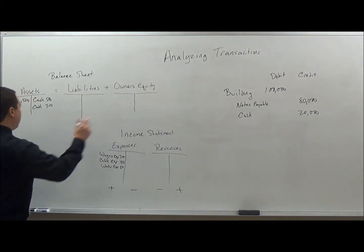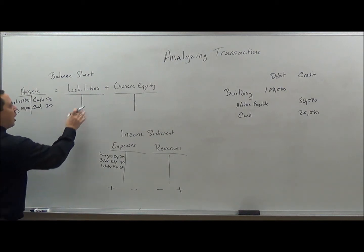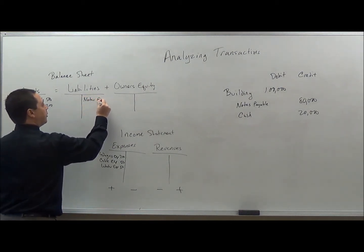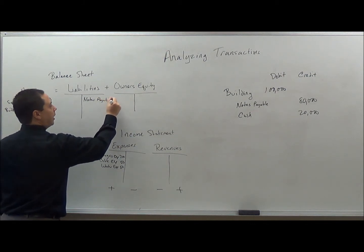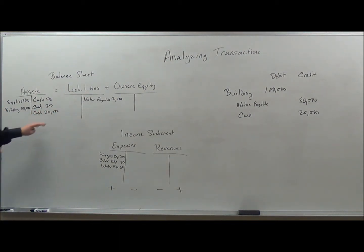And so let's put those over into the appropriate places in the balance sheet. So in here I have the building, an asset for $100,000. And then I also have notes payable here, a commitment to pay them of $80,000. And then I'm going to take away cash of $20,000. And so that is how it breaks down.